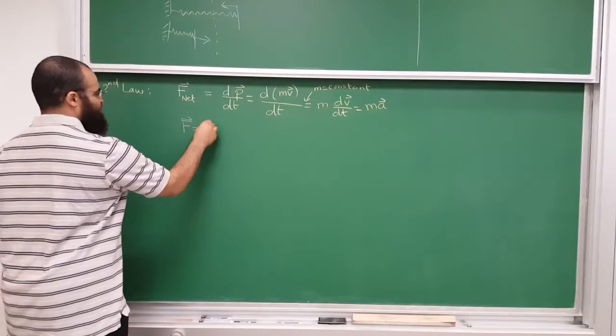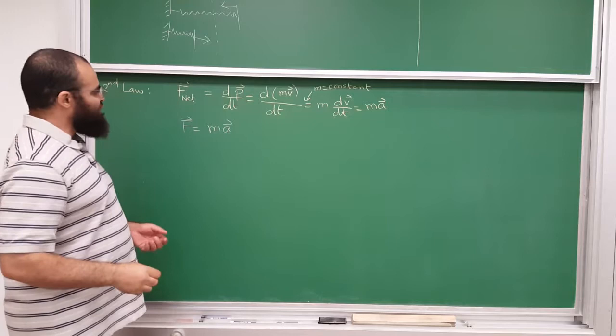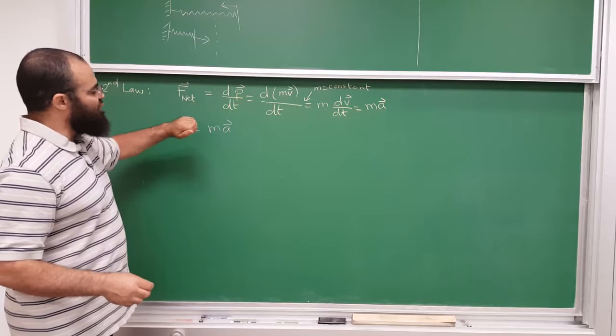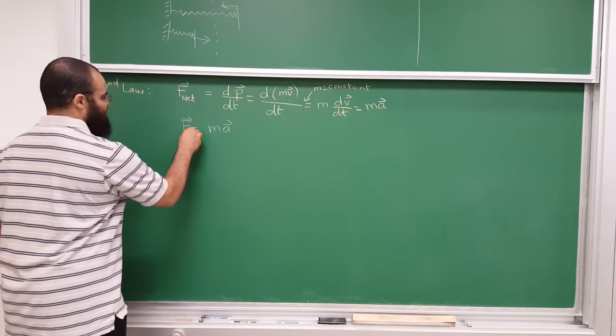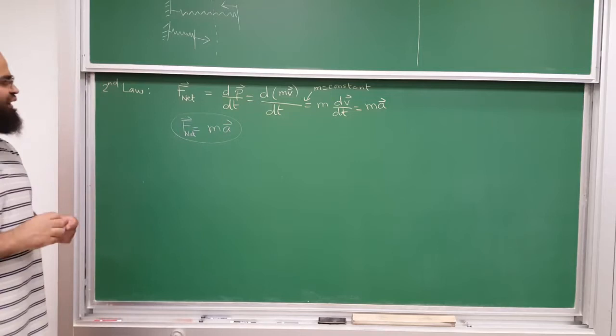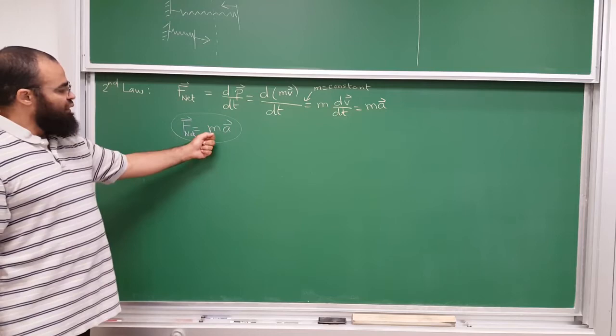Usually people will just give you this form F=ma, and then when we talk about momentum, they say, by the way, we didn't really tell you the whole truth — it's actually dp/dt, the rate of change of momentum. So I'm telling you that ahead of time, right now. If the mass is constant, and the mass is usually constant, we would just use F=ma.